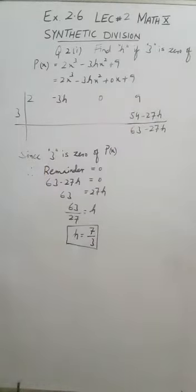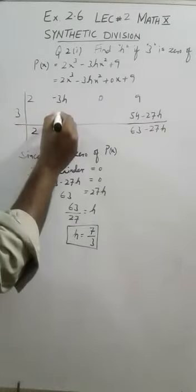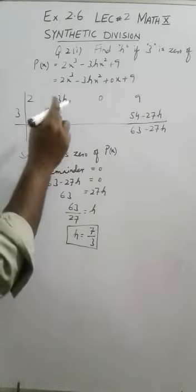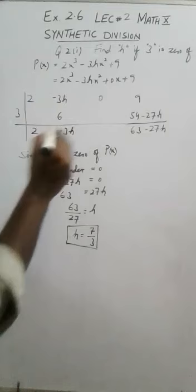This 2 will come as it is. Now 3 into 2 is 6. Now these are unlike terms, cannot be added or subtracted, so I will write as it is: 6 - 3h.